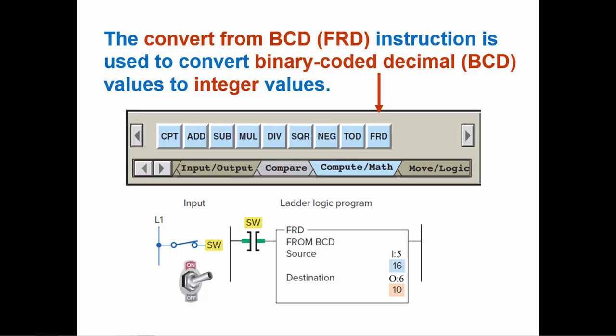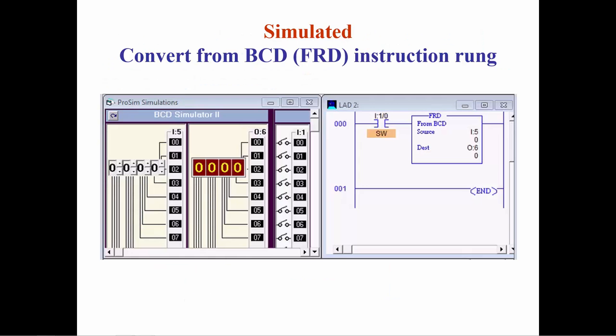The FROMBCD instruction, or FRD, converts the BCD code into a 16-bit integer. The source is the BCD value and the destination is the integer. In this simulation, we will use the thumbwheel switch's BCD value as the source and the BCD outputs as the destination.